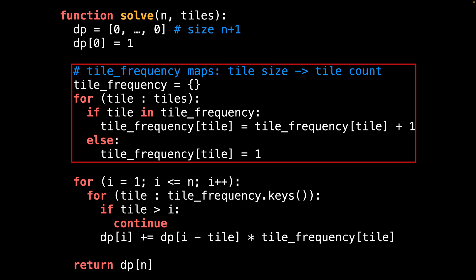The next thing I do is declare a map data structure called tile_frequency, which counts the frequency of each tile length, then I iterate over all the tiles and count the frequency of each tile length.